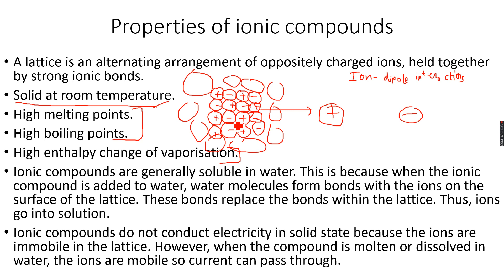These ions, even though they are charged, cannot move, and an ionic compound has zero overall charge. The overall charge on an ionic compound is zero. So these ions are not mobile — they cannot move — and the ionic compound has an overall charge of zero. Therefore, there can be no conductance of electricity.